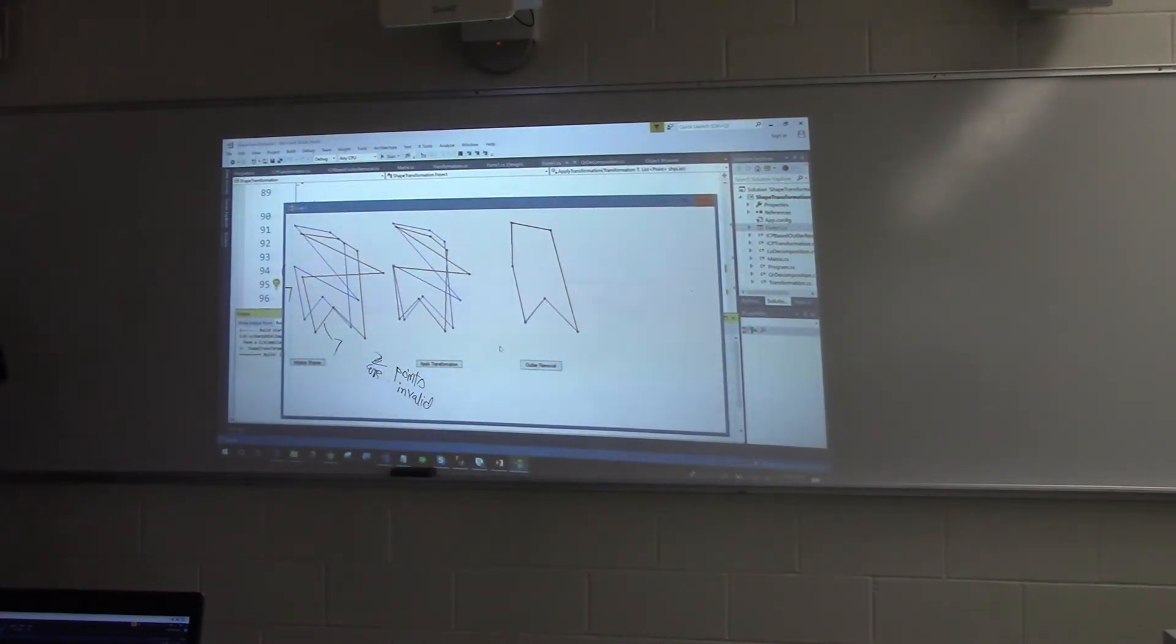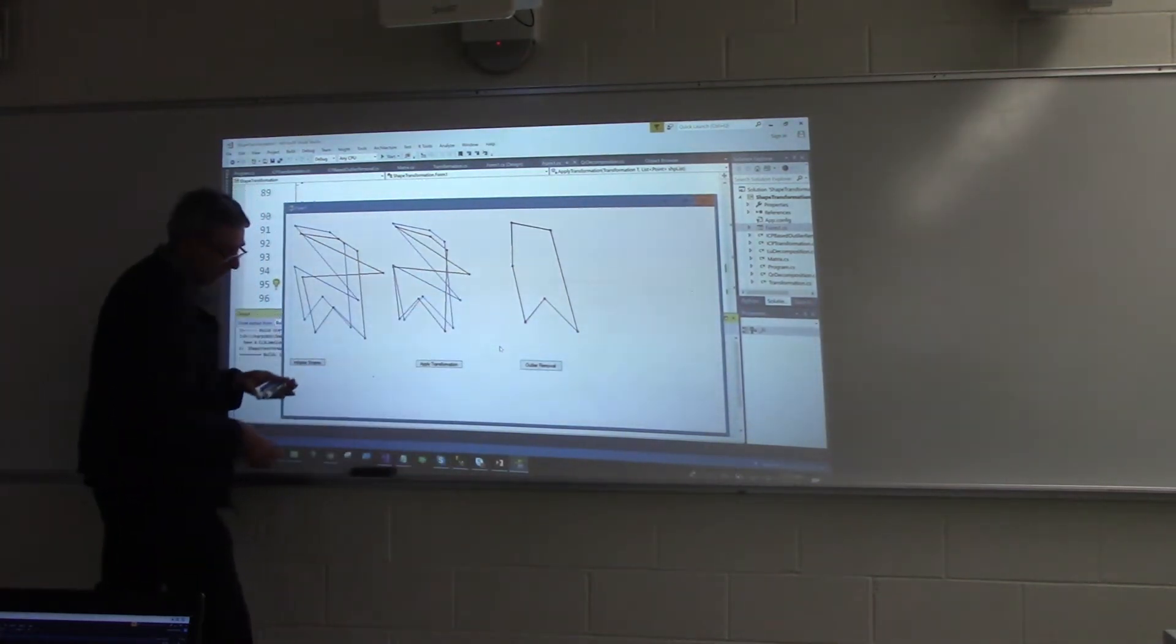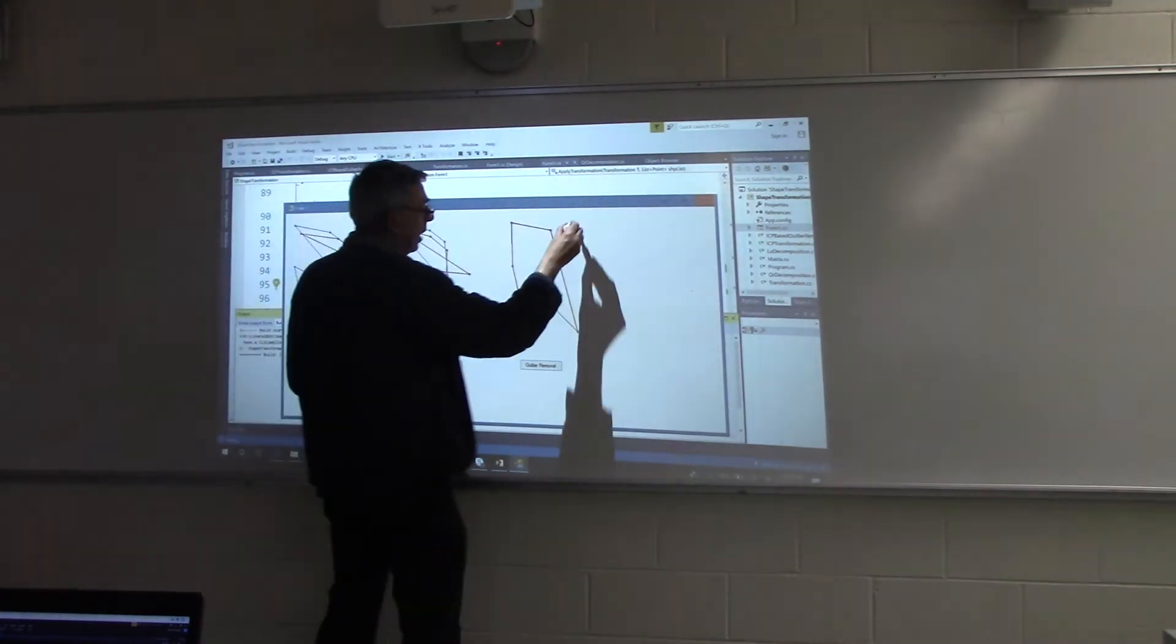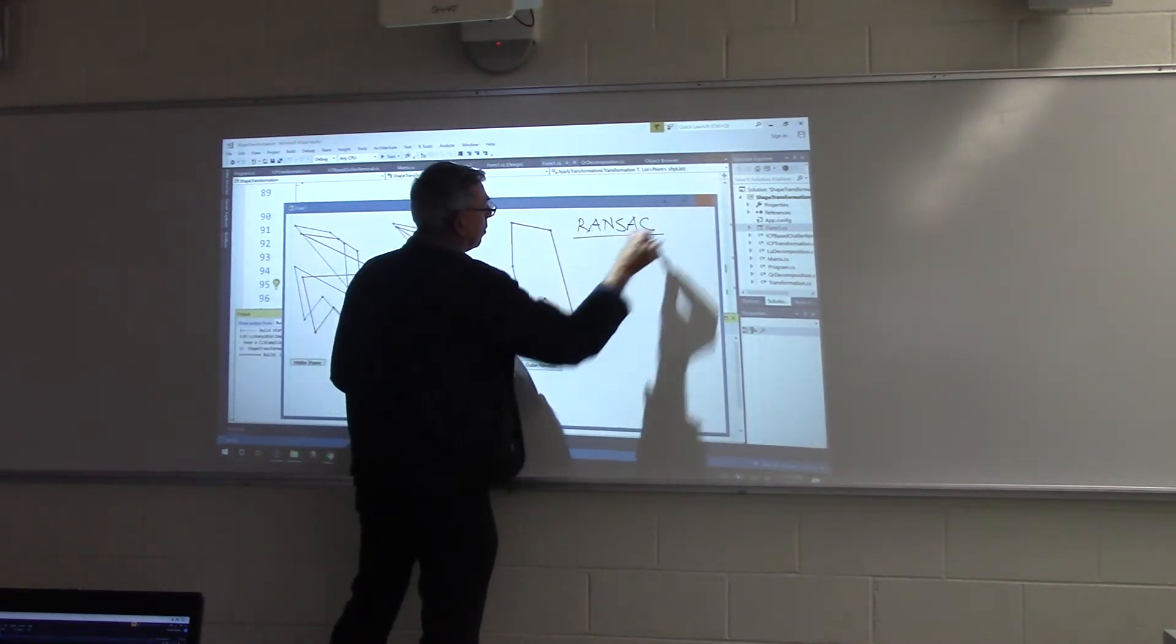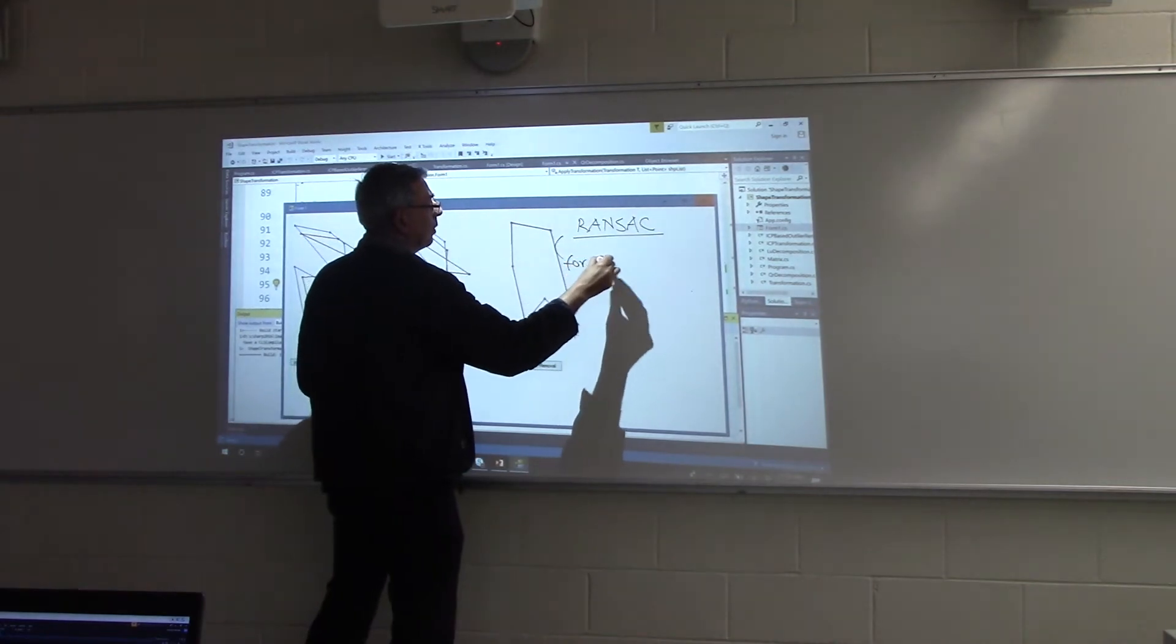For ten or so correspondence points, it's no big deal. But if the correspondences are, let's say, in the thousands, then it would be pretty bad. So this is where another algorithm is typically used. In most of the computer vision work, if we have to remove noise, there's an algorithm called RANSAC for removing outliers.